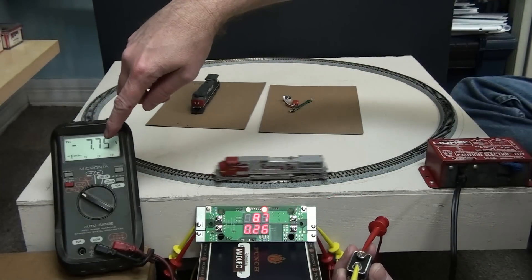Now that we have the NCE power cab hooked up, you can see that our track voltage, 13.8, is set by the cab. Our DC voltage is no longer functional. Even if you go to AC, you're not going to get an accurate reading because of the way that the waveform is set on the track. And it's all done in binary type codes to run your individual decoders.